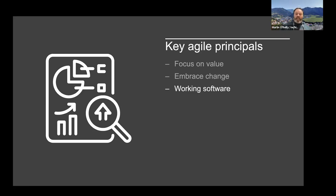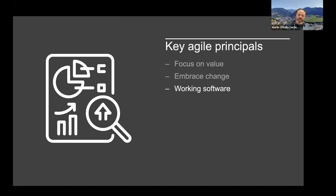Working software is the primary measure of success. After every iteration you have some version of working software with some incremental addition of value that banks the work done so far. Occasionally you might do what we call a spike — a bit of a research exercise. When starting projects where we're very uncertain, in REG we often do something called a back brief: a week or two where we talk to people, do extended scoping, and look to understand the data and the problem. That might result in a summary paper, or you might build some software to try out an approach and then throw it away. What you've banked there is the learning.